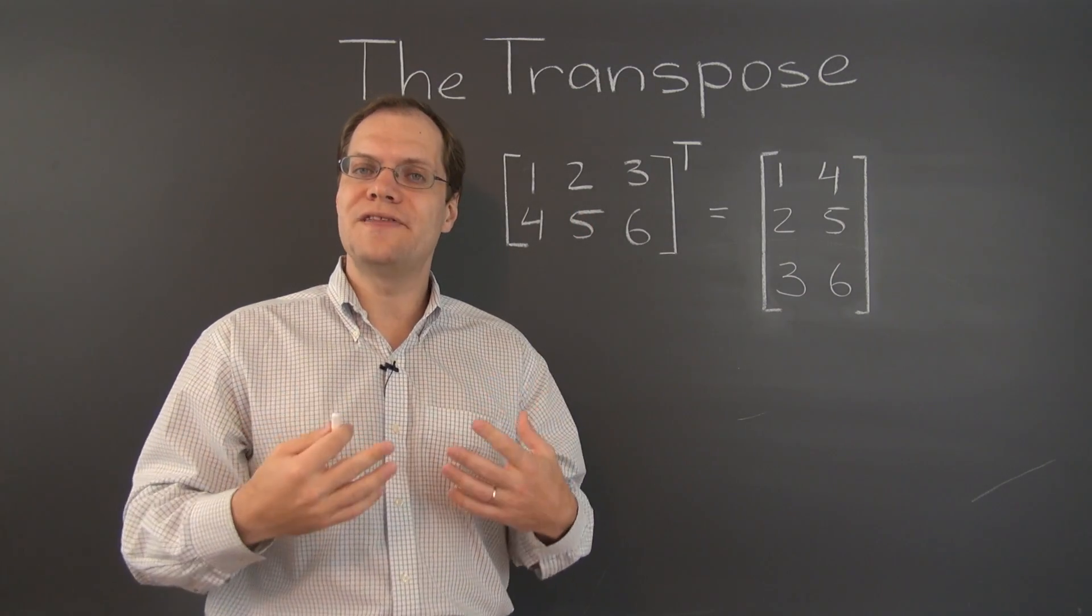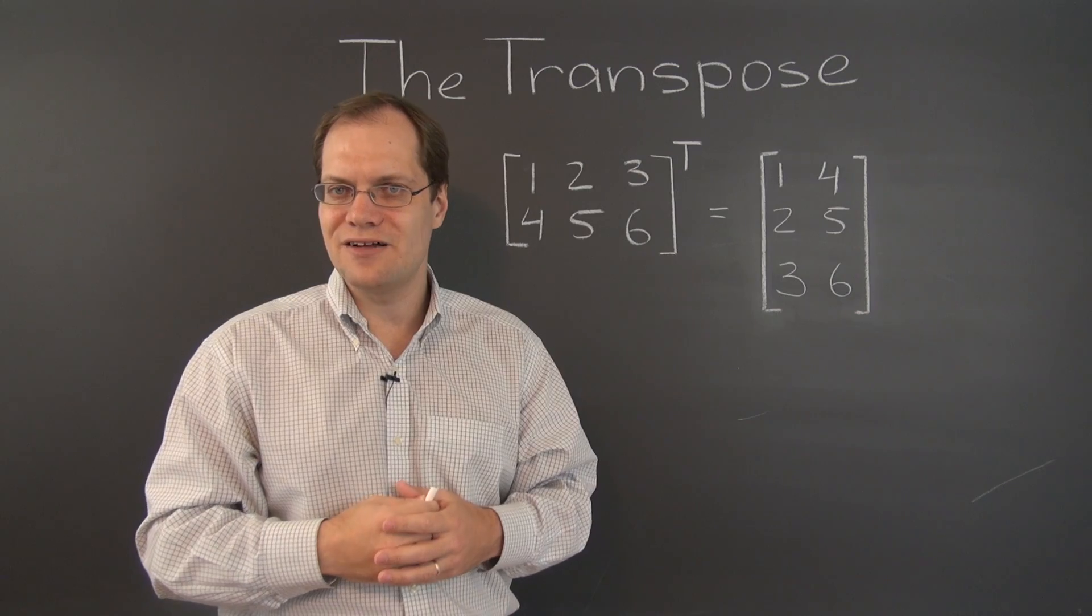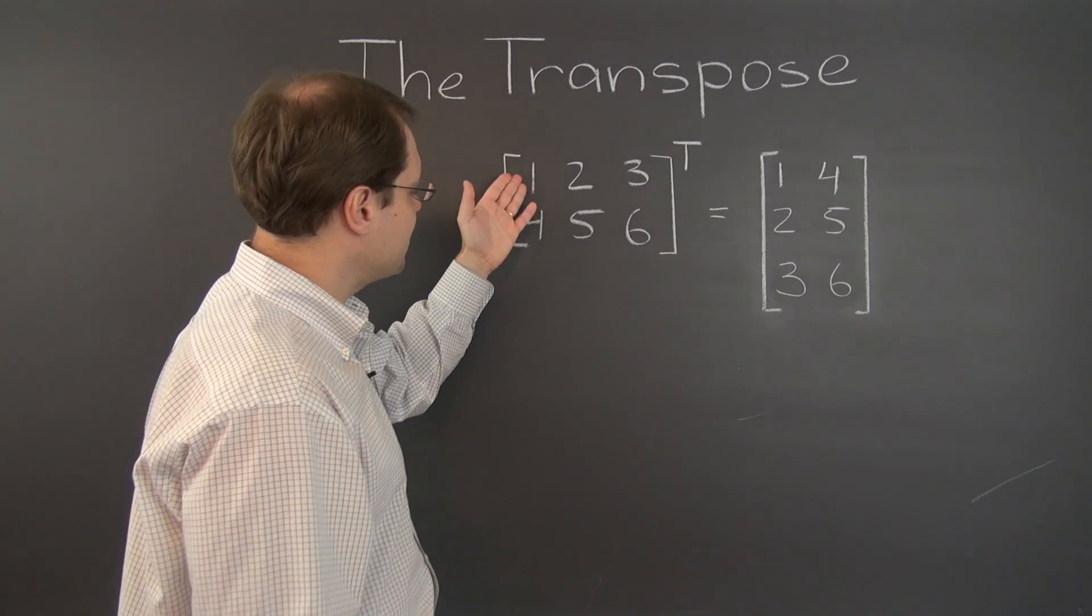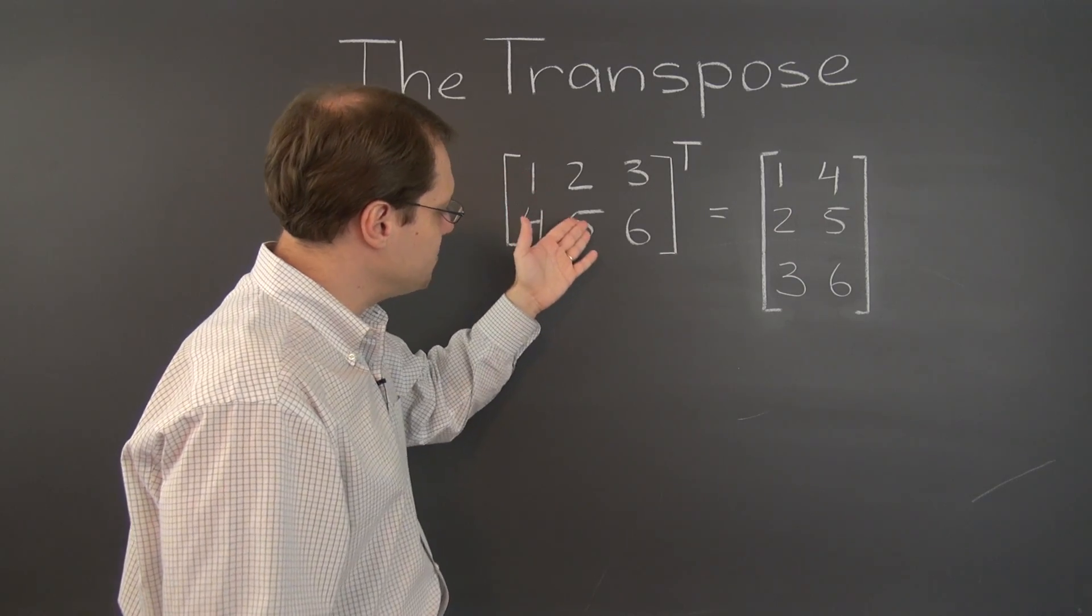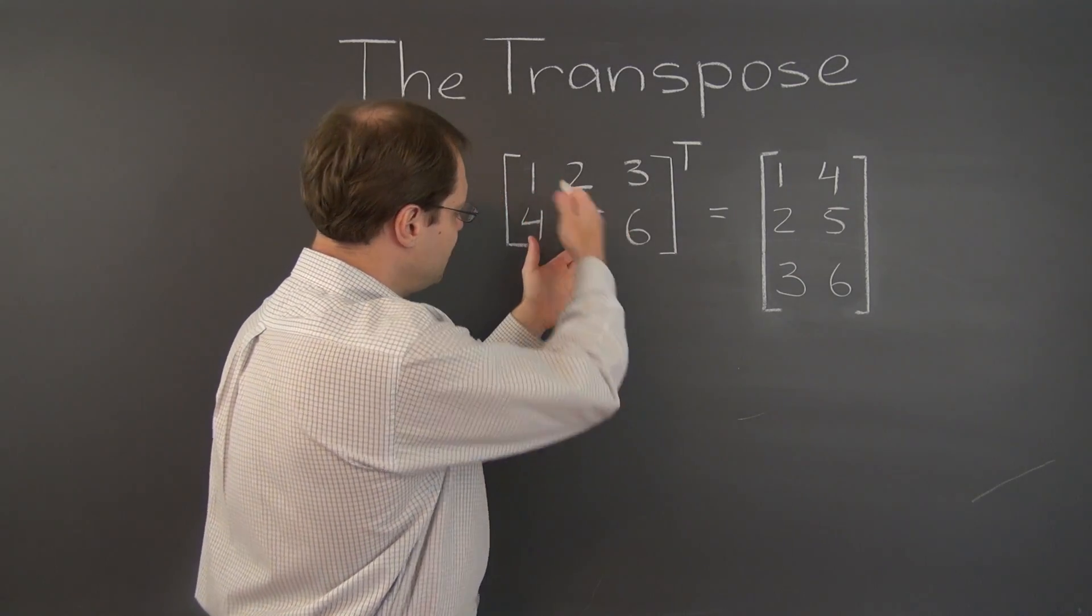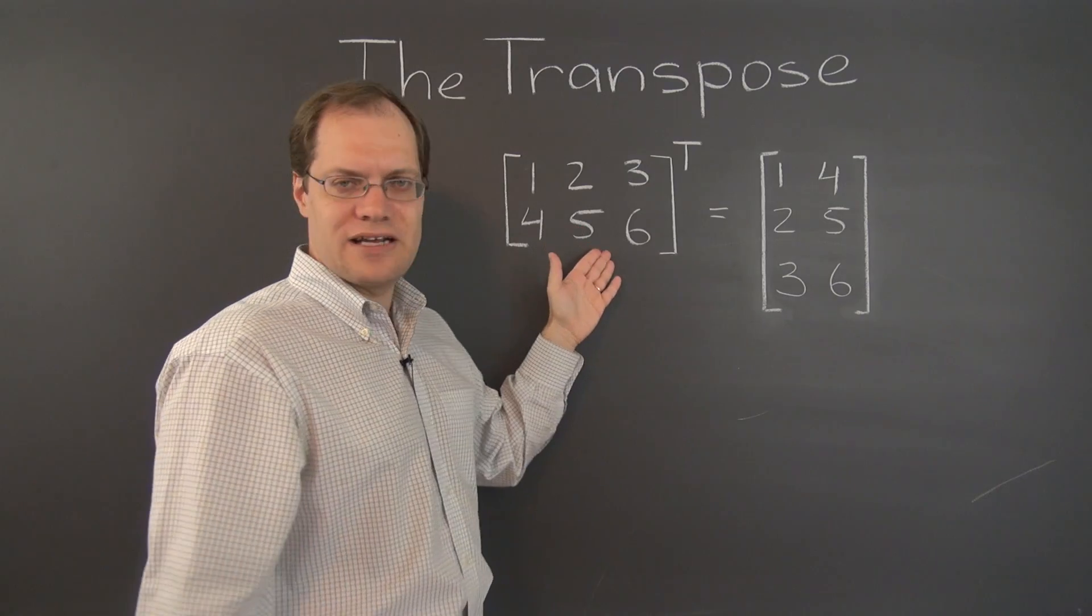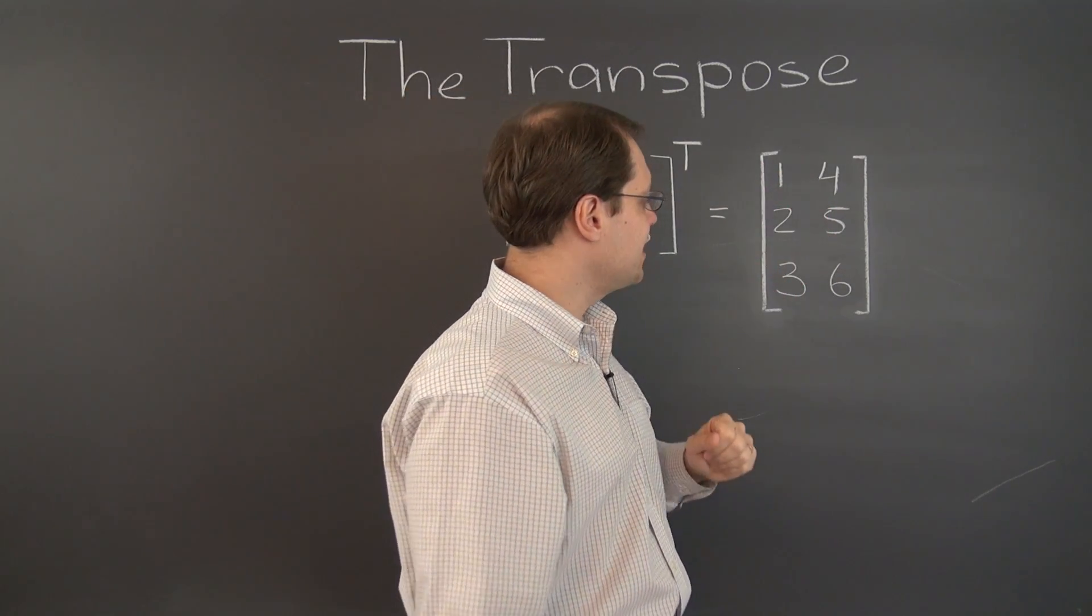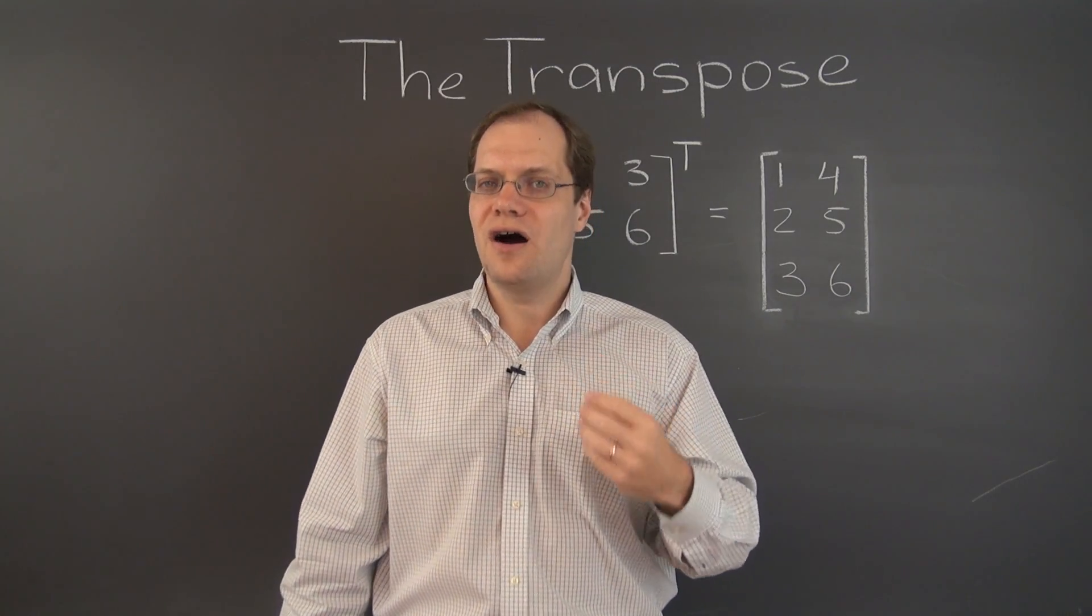And of course, all of the entries on the main diagonal itself remain put. They stay right where they are. So the main diagonal of this matrix, it's not the full main diagonal, partial, has entries 1 and 5. And of course, the transpose, once again, has the entries 1 and 5 on the diagonal.